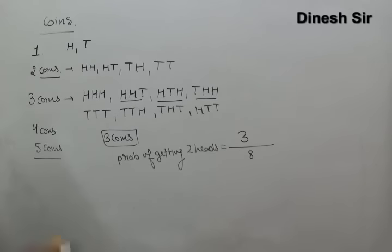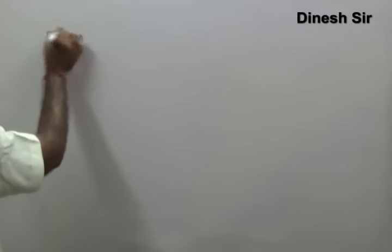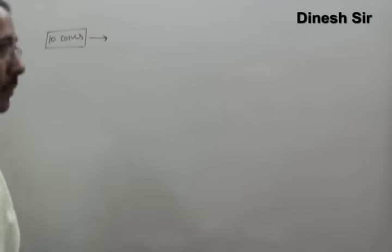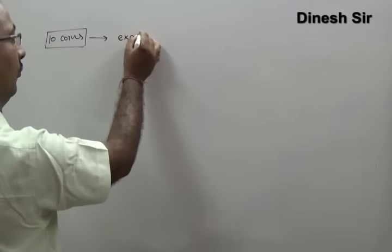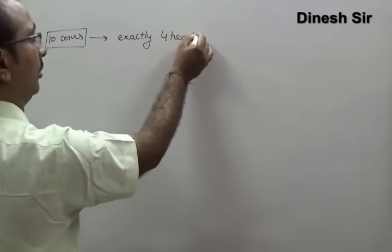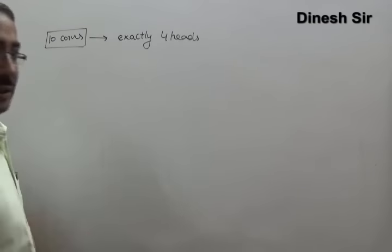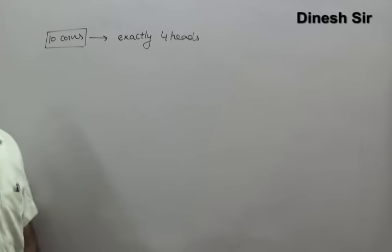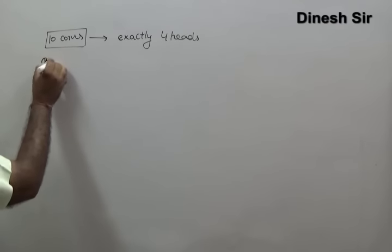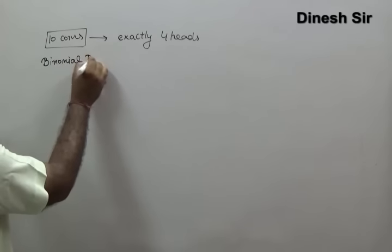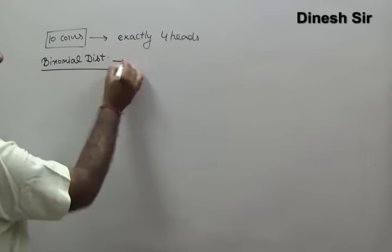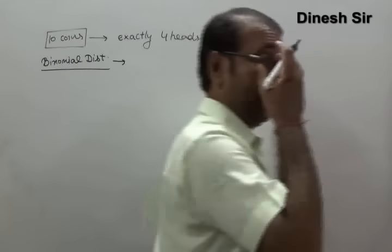Our problem starts when the number of coins is large. For such questions, we apply the concept of binomial distribution. For applying binomial distribution, the first condition is that events must be complementary to each other — meaning the sum of their probabilities equals 1.